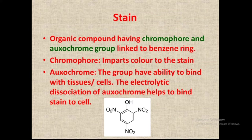The second important group is the oxochrome. This oxochrome group has the ability to bind to cells or tissues. It undergoes electrolytic dissociation, which helps in binding of the stain to the cell surface or to the various components of the cells.